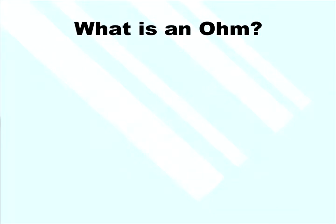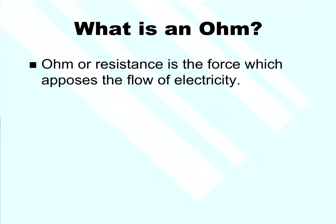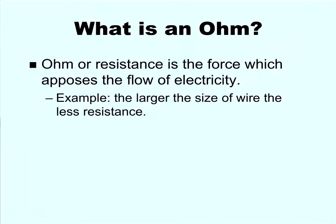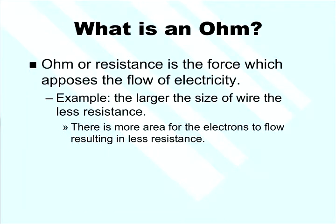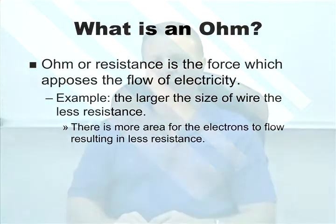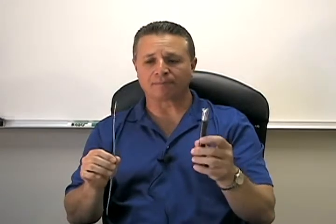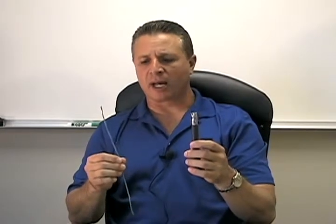Next we talk about ohms. Ohm, or resistance, is the force which opposes the flow of electricity. The larger the size of wire, the less resistance — there is more area for the electrons to flow, resulting in less resistance. Here I have two wires: a small wire and a big wire. The smaller wire can only handle 20 amps; anything over 20 amps this wire will have a problem because it has higher resistance. This bigger wire can handle around 200 amps and has much less resistance than the smaller wire — that's why more amps can flow through it.